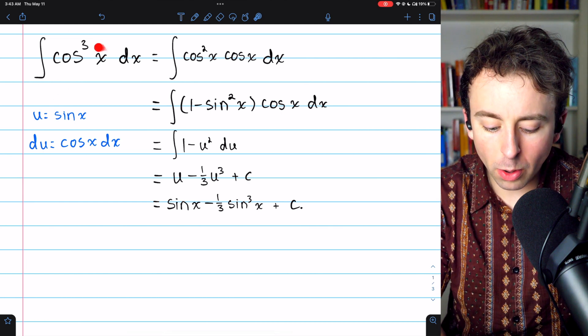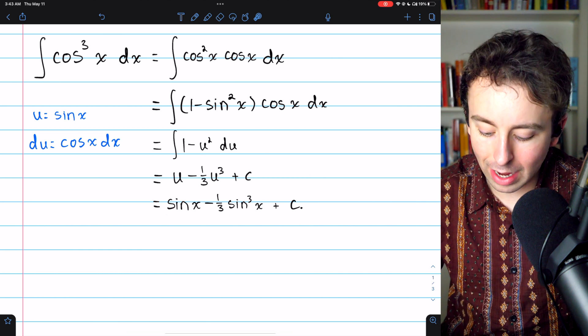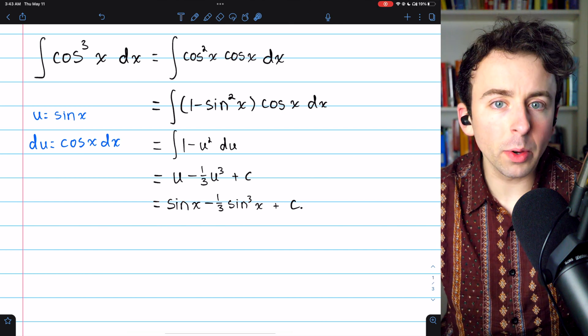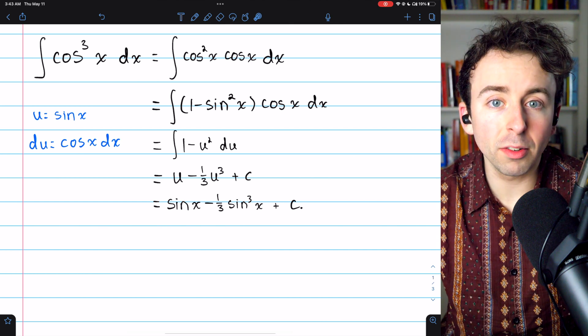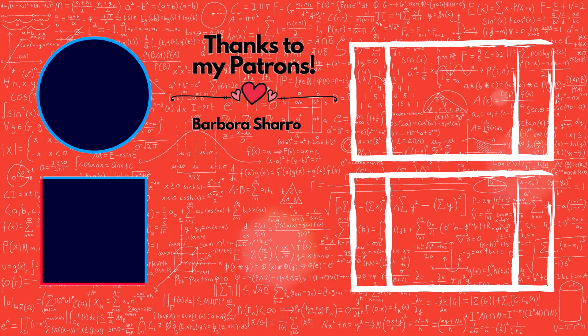And we see that the integral of cosine cubed x is sine x minus a third sine cubed of x plus c. Let me know in the comments if you have any questions, and check out my Calculus 1 and Calculus 1 exercises playlists in the description for more.